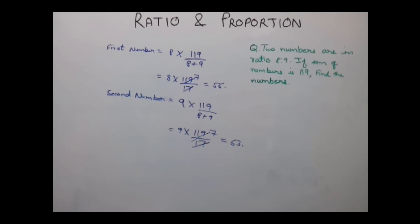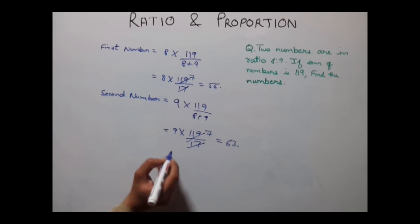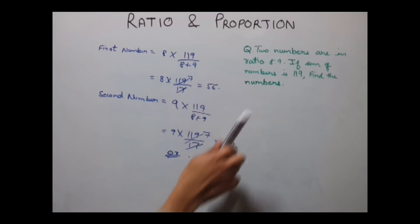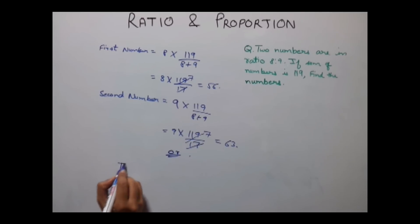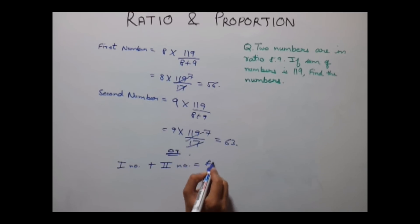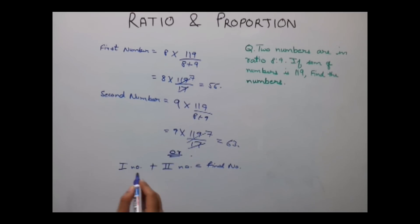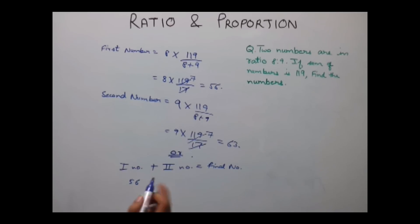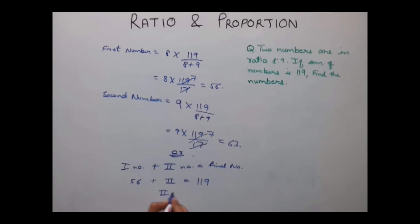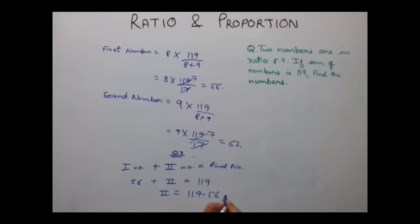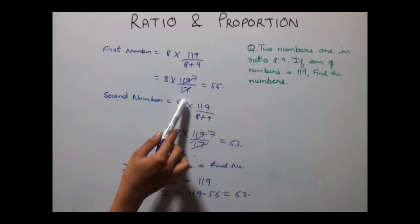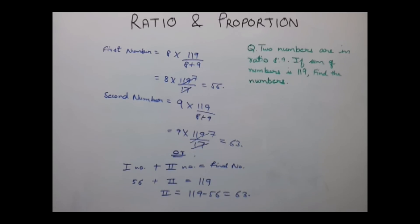There is another way to find the second number. Since the first number plus the second number equals the final sum, and the first number is 56, the second number equals 119 minus 56, which is 63. So you can calculate the second number either way.